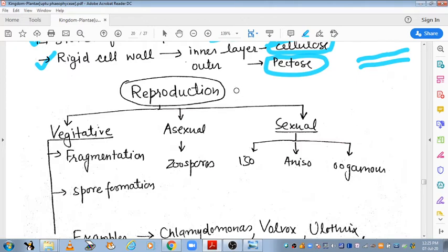Asexual reproduction occurs via zoospores. This I have discussed in previous videos. What are zoospores? These are motile flagellated spores. This is a type of asexual reproduction.